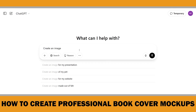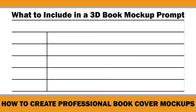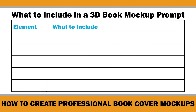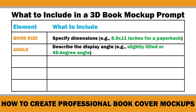The key to getting a great 3D mockup is in the prompt you write. Here is a quick breakdown of what to include for a clear and effective prompt. The first one is book size — make sure to specify the book's dimensions, like 8.5 by 11 inches for a paperback. Next, we have angle — define how you want the book displayed. For example, you could say slightly tilted or at a 45-degree angle to create depth.